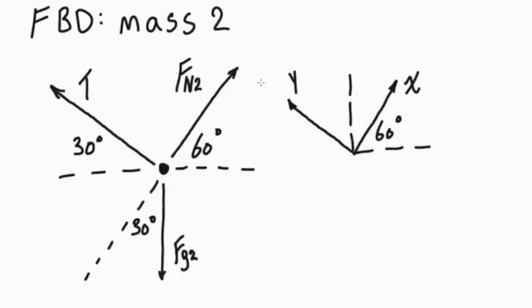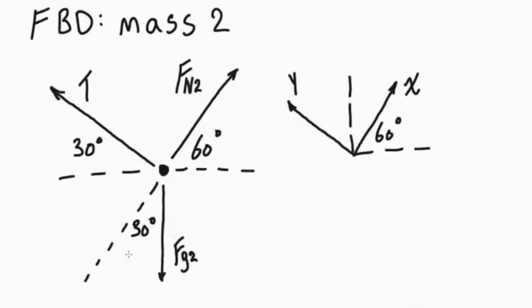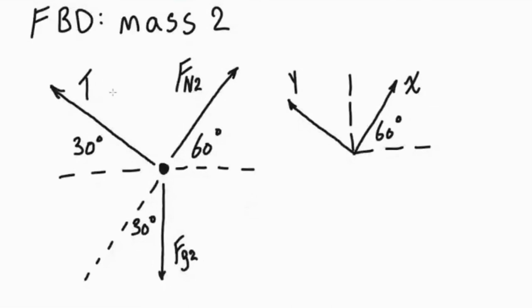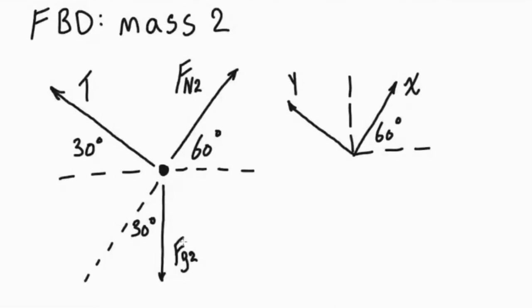So what we'll do when we write out those equations is we'll have tension minus FG2 sine 30. And now that we know what the tension is, we have that value. Now we can look at FG2 and use that to figure out what the mass is. And that's what they originally asked for.